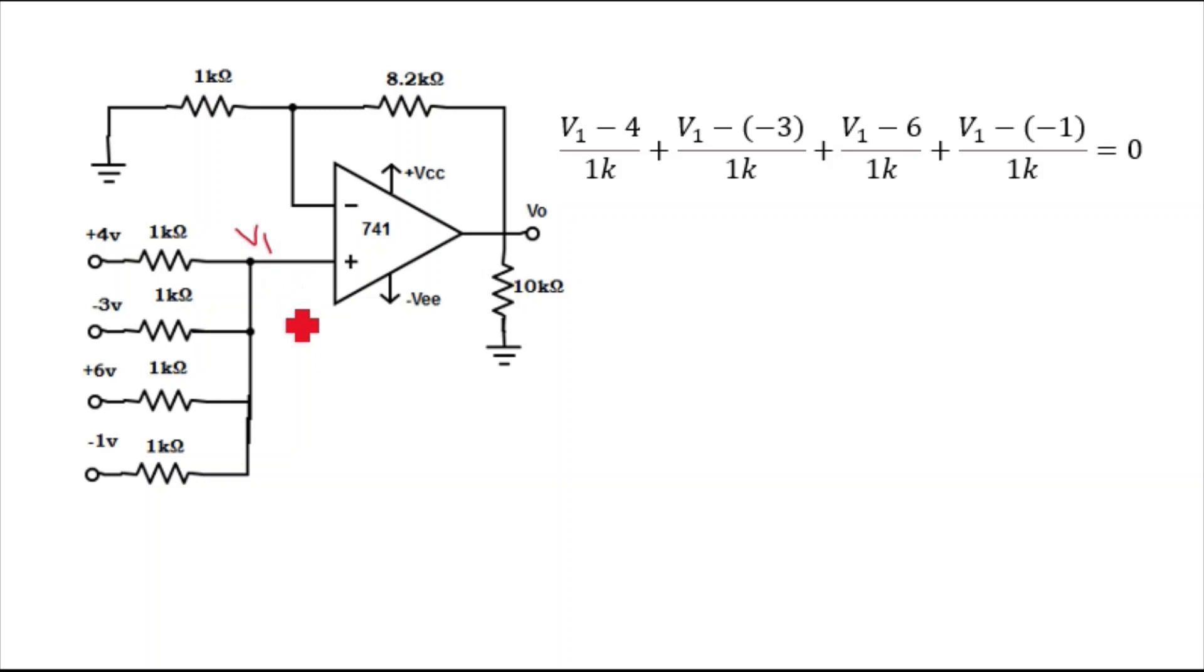I'm considering all the currents are outgoing from this node. I'm going to apply nodal analysis at node V1.